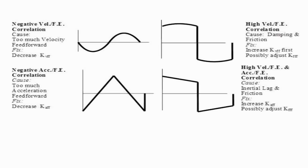The top left corner shows a response that is the opposite from the diagram in the top left corner of the previous slide. This shape is due to having too much kVFF, so decrease kVFF until the valley on the left and the peak on the right both disappear, and the following error oscillates about zero.